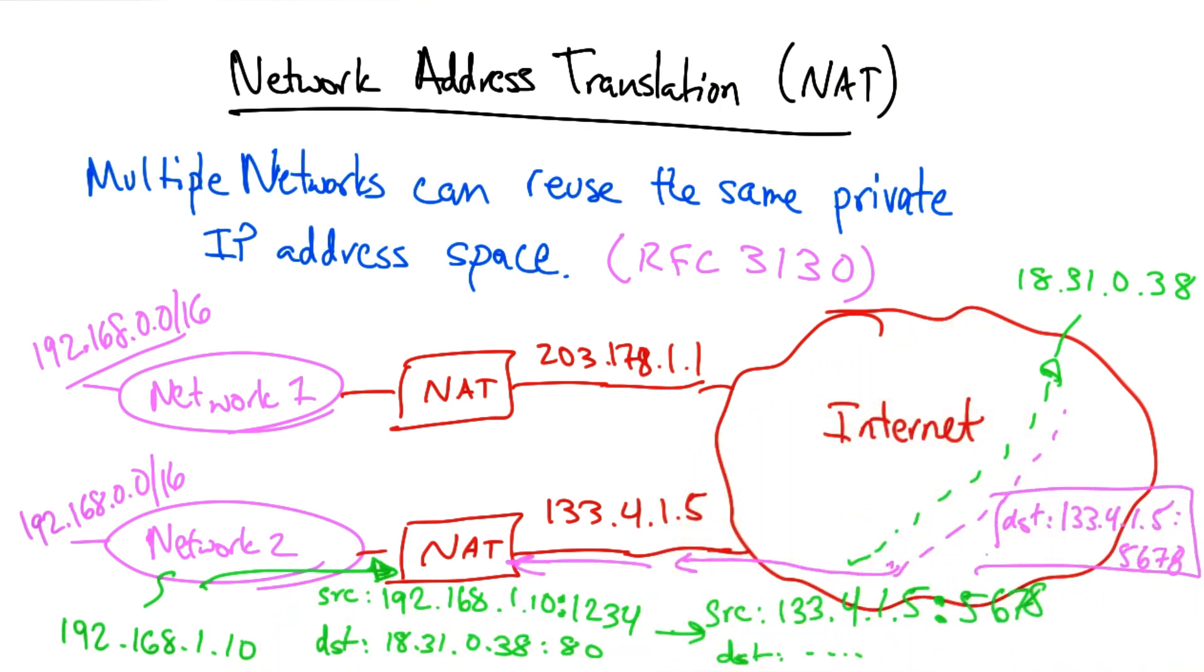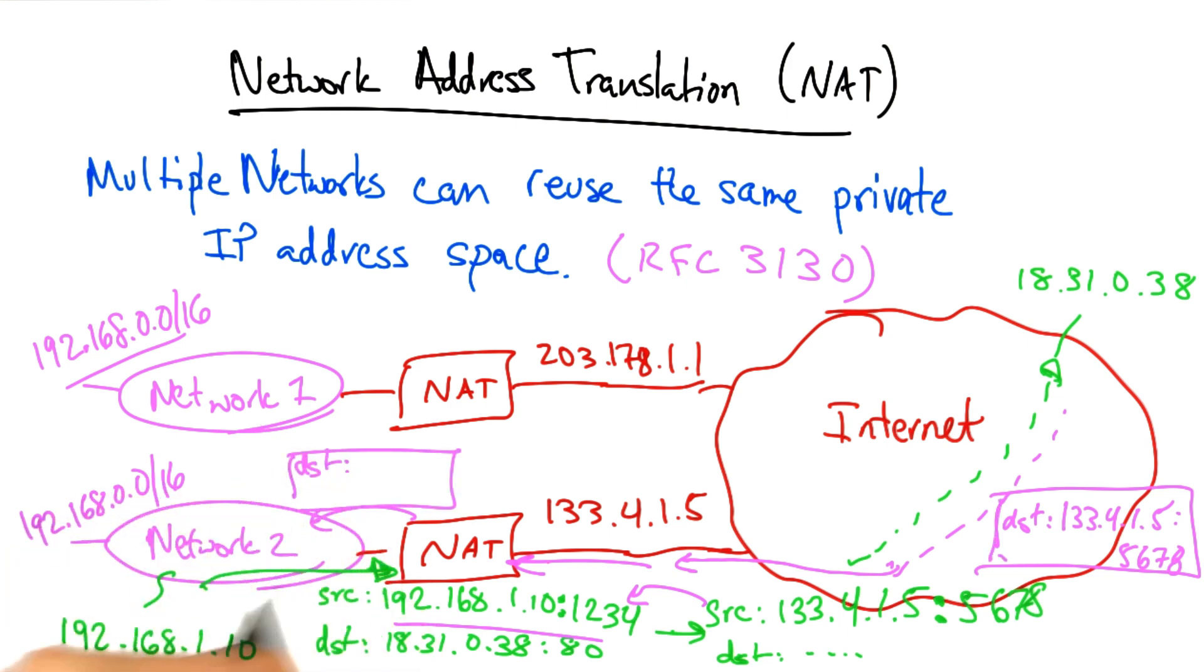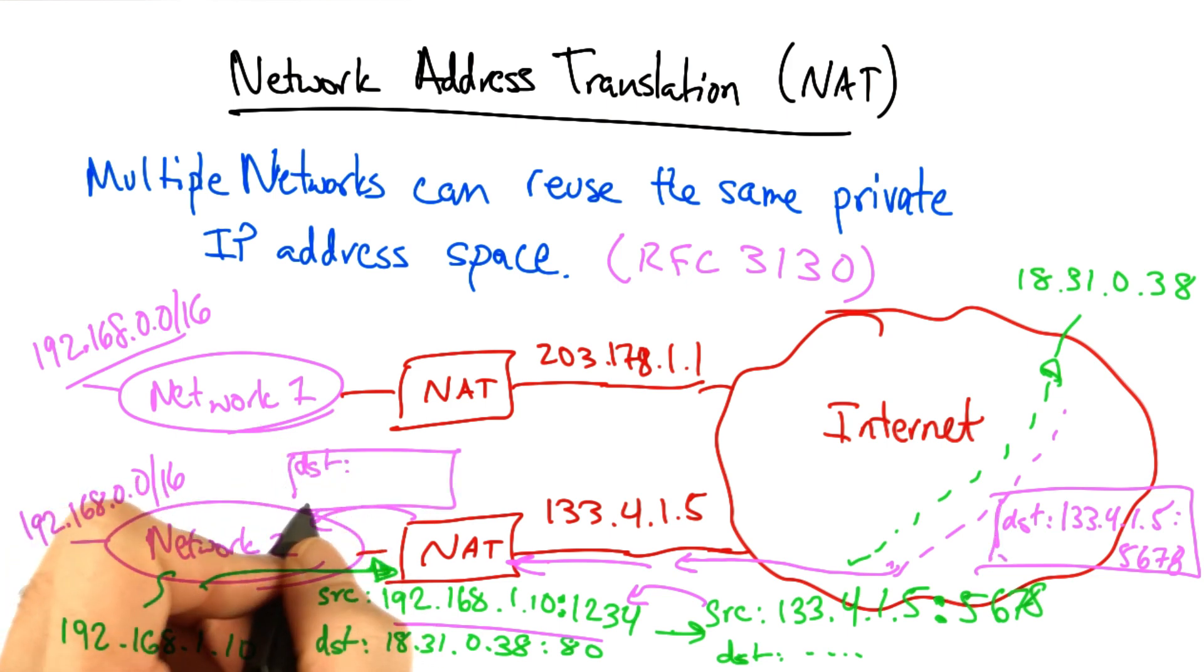Now when that packet with that particular destination IP address and port reaches the NAT, the NAT has a table that knows the mapping between that public IP address and port, and the private one that it rewrote to generate the corresponding public IP address and port. So it can simply now rewrite the destination IP address of this packet to the corresponding private address and port.